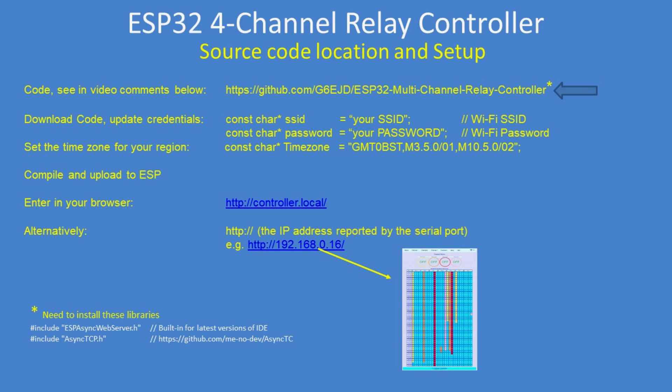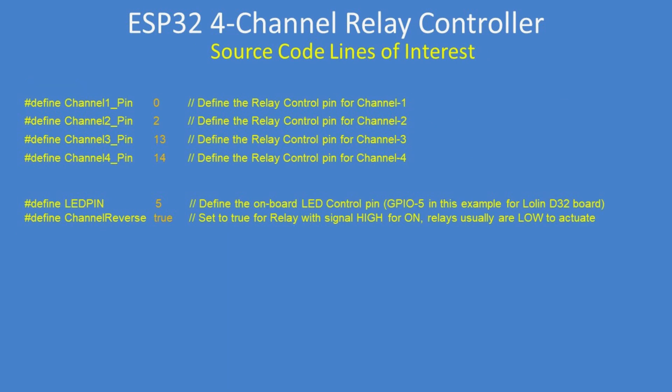Note that you do need to install those libraries, but that's detailed in the source code. Define the pins you want in the source code — I've used 0, 2, 13, and 14. Steer clear of pin 12; it's not a useful pin as it affects the startup of the ESP32. You can also define the LED pin, which is usually defined on most boards, and if you want to change the sense of the relays, use the channel reverse variable.